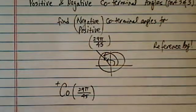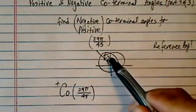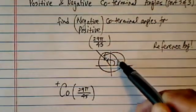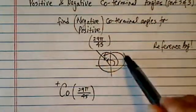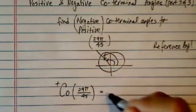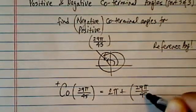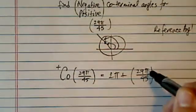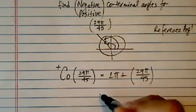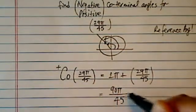Coterminal for positive 29π over 45 is really to say, look, this angle is pretty good. It's between 0 and 2π, but we want to make sure to add 2π to it, and that's all I'm looking for. So I have 2π plus the angle I have, which is already pretty slim, 29π over 45. So all you have to do is do a common denominator.